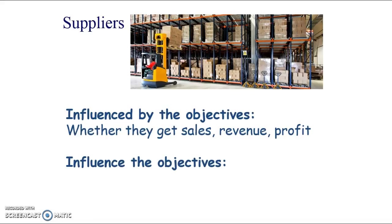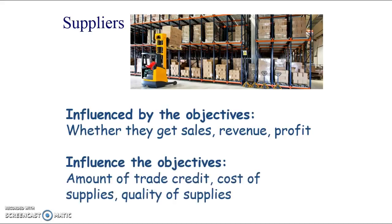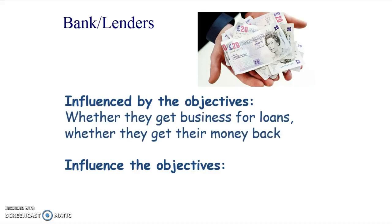Suppliers are influenced by the business's objectives because the business is their customer — they want to get sales from it to make revenue and profit. In turn, suppliers can impact the business by deciding whether to offer 30, 60, or no days of trade credit, affecting the business's cash flow. Suppliers also determine the cost of supplies, profit margins, and the quality of raw materials that go into the business's own products.